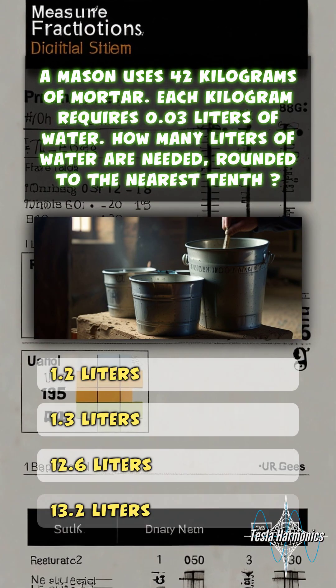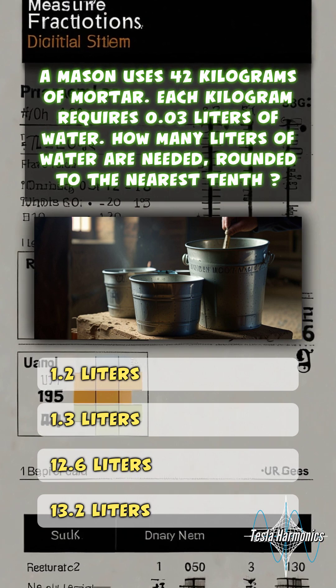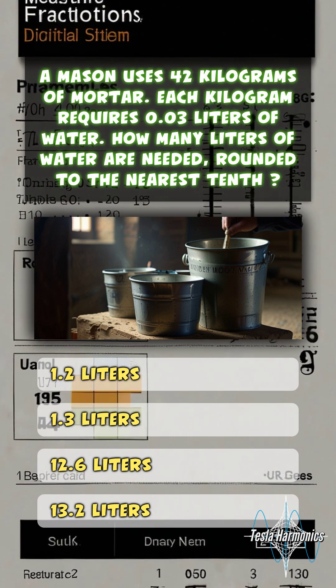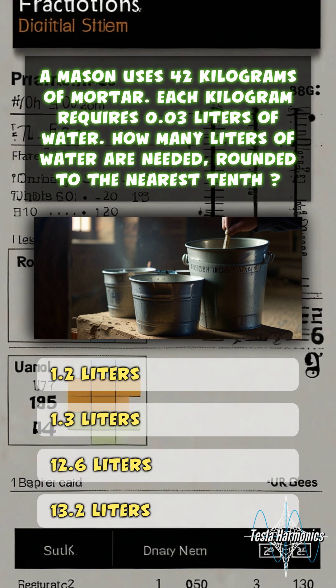A mason uses 42 kilograms of mortar. Each kilogram requires 0.03 liters of water. How many liters of water are needed, rounded to the nearest tenth?